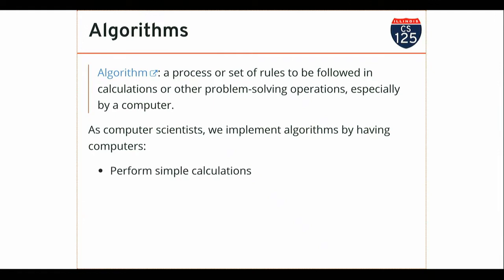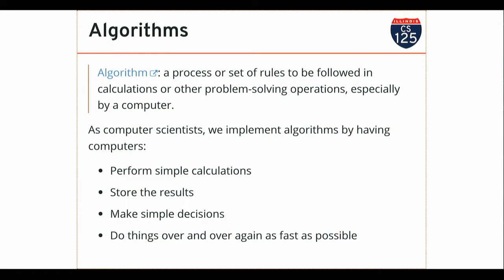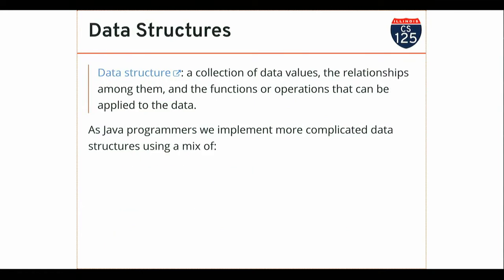As computer scientists, we write algorithms that perform simple calculations, store the results, repeat that process, and make simple decisions — those are our building blocks. We're also talking about data structures, and these are two highly complementary topics. We talk about algorithms that we can run on certain data structures, and data structures that we use to support certain types of algorithms.